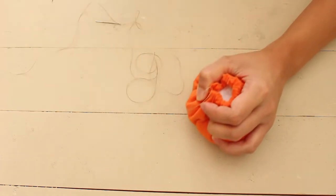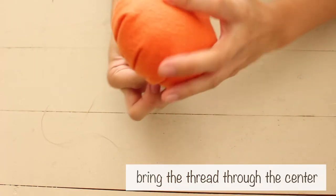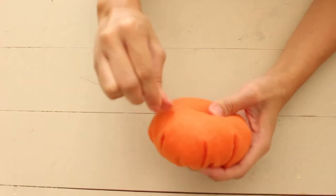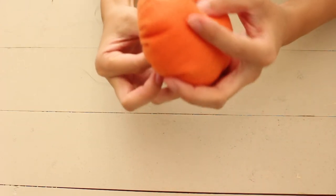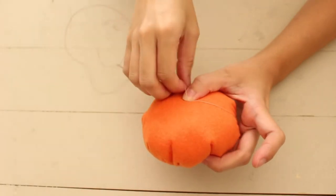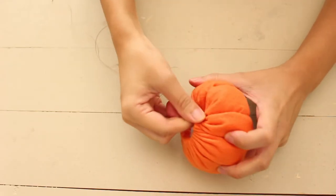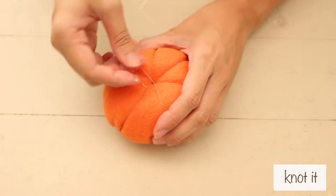I knotted the end and brought the thread to the center of the pumpkin. I brought it to the top center and back down to the bottom a few times. Tie a knot and cut the thread.